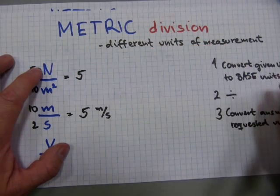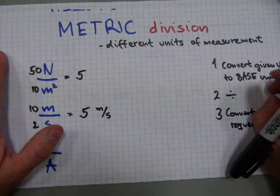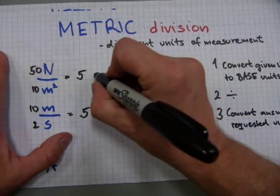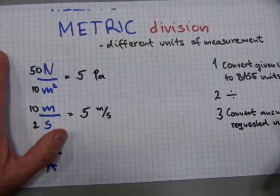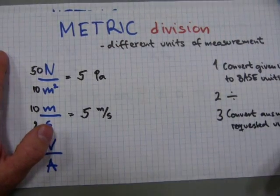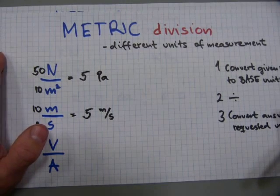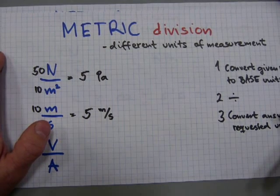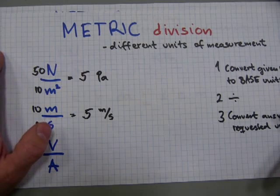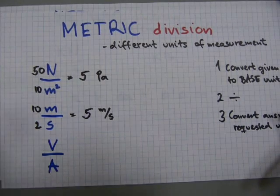Sometimes these different units of measurements, the newtons and the square meters, combine to form a new unit of measurement. This one is capital P lowercase a. Pa stands for Pascal, named after Blaise Pascal, a brilliant French mathematician and physicist.